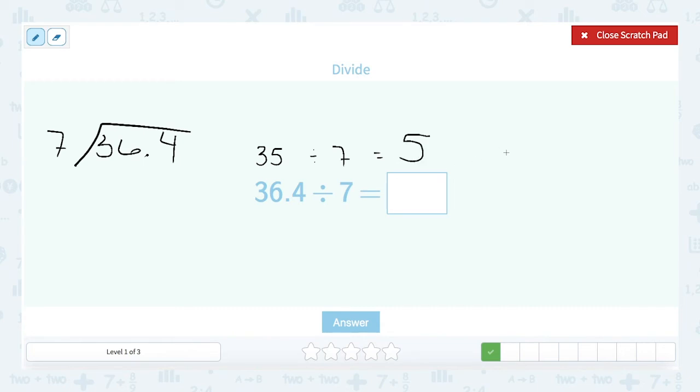35 divided by 7 equals 5. So I should expect that I'm going to get a number close to 5. Now 36.4 is greater than 35, so I'm actually going to get a number that's a bit bigger than 5, 5 point something. But as I'll show you a little later, there's a really good reason to estimate before you start. So let's go ahead and remember the first thing that we need to do is bring our decimal straight up, and now we can divide.